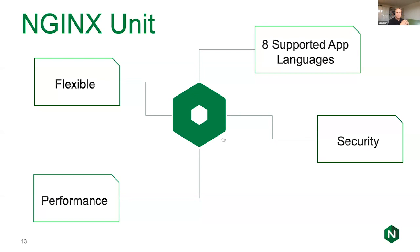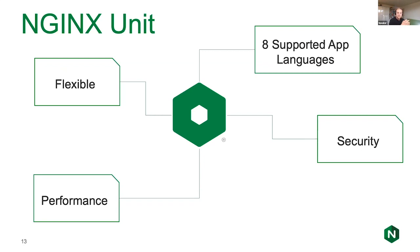Flexible means that nginx unit is fully configurable via a REST API. You can send configuration to the unit app server just by curling a specific HTTP endpoint and sending JSON. That's a big change from the traditional nginx configuration file. At the moment, nginx unit supports eight different languages: Go, Java, JavaScript, PHP, Perl, Python, and Ruby — plus assembly.